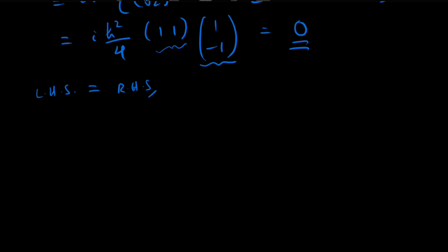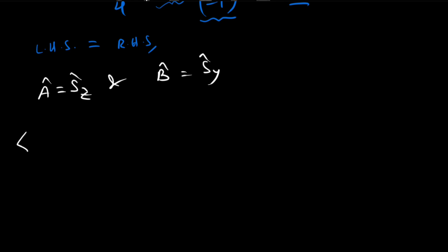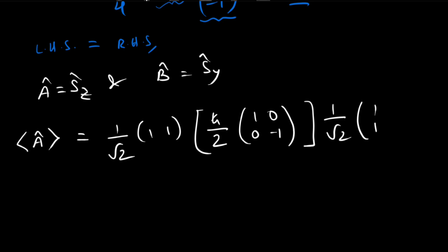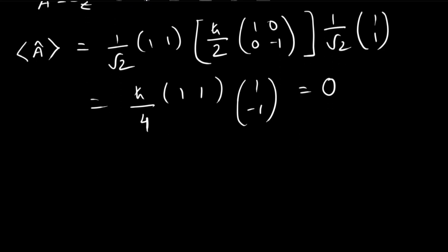Now for the second condition: A = Sz, B = Sy. The expectation value of A is ⟨Sz⟩ = (1/√2)(1,1) · (ℏ/2)[[1,0],[0,−1]] · (1/√2)(1,1) = (ℏ/4)(1,1)·(1,−1) = 0.